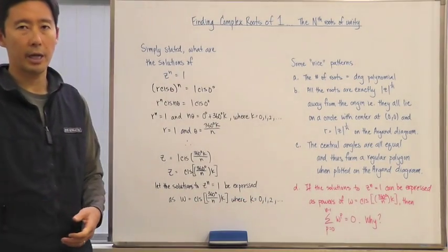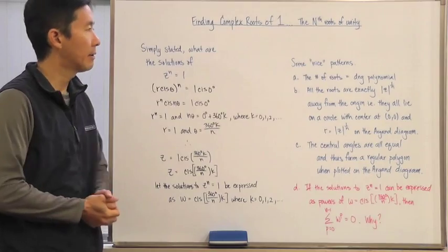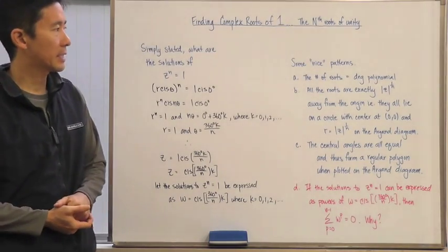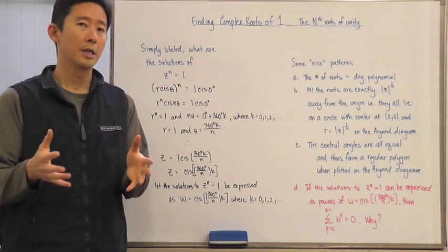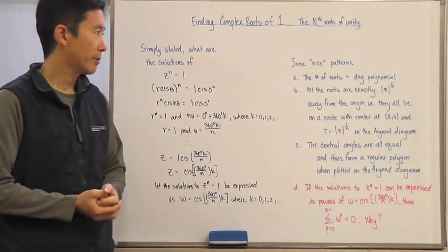Again, where k is equal to 0, 1, 2, 3, and so on. Now I'm hoping that all of us have seen some nice patterns, especially when we go ahead and put all of these different solutions to these polynomial equations on the Argand diagram.